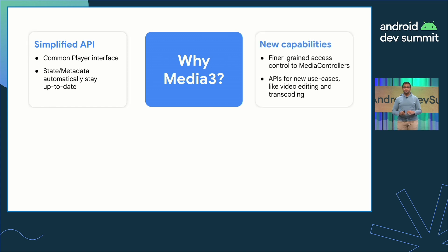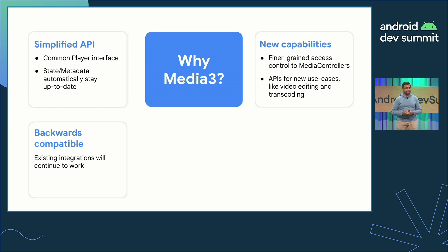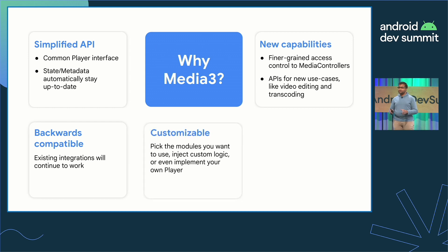Media 3 is also where we're introducing new capabilities, such as the ability to specify which playback commands are available to media controllers on an individual basis. In addition, we're expanding beyond playback use cases with a new module called Transformer for video editing and transcoding use cases. Media 3 is fully backwards compatible with legacy APIs, such as Media Compat, so that all of your existing integrations will continue to work. Media 3 also retains the customizability and modularity that developers enjoy with projects such as ExoPlayer, which itself is now a module within Media 3.